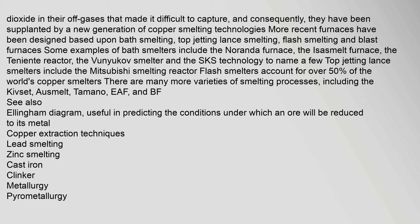There are many more varieties of smelting processes, including the Kieser, Ausmelt, Outokumpu, EAF, and BFC processes. Also useful is the Ellingham diagram, for predicting the conditions under which an ore will be reduced to its metal. Related topics include copper extraction techniques, lead smelting, zinc smelting, cast iron, clinker, metallurgy, and pyrometallurgy.